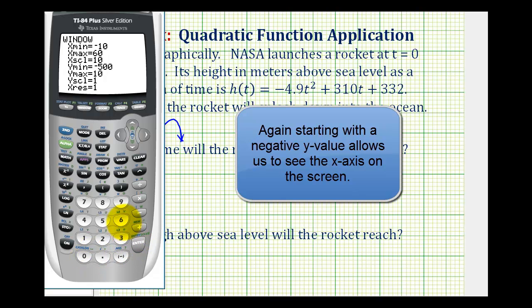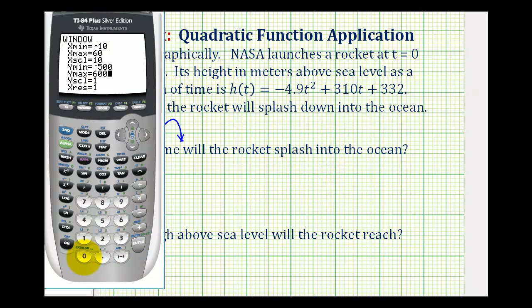And then we'll go a maximum of 6,000. Again, if this doesn't work, we can always come back and adjust it. Let's change the y scale to 500, and now we'll press graph. And this window looks pretty good, but let's go ahead and extend the x maximum further, so we can see where this parabola crosses the x-axis for a second time. So we'll press window, let's change the 60 to 70, and press graph.